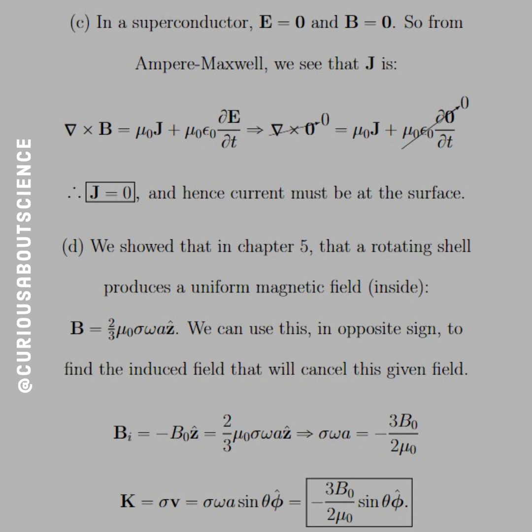Again, J is equal to the volume current density, not the surface current density. So the volume current density is 0. Thus, in the next part, we can solve for the surface current density. They kind of stay semi-symmetric with the electrostatic case.